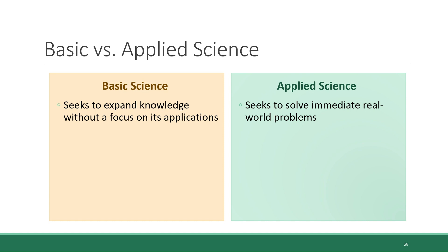Applied science, on the other hand, is focusing on solving immediate real-world problems. While some people's first instinct might be to say that basic science is less useful than applied science, both are very important. That's because, although basic science does not always have an immediate application in mind for the knowledge it is pursuing, the information that we get from basic science often leads to future solutions to problems.